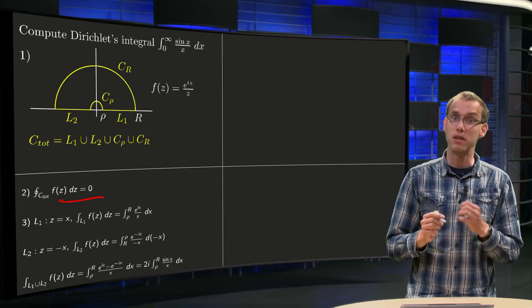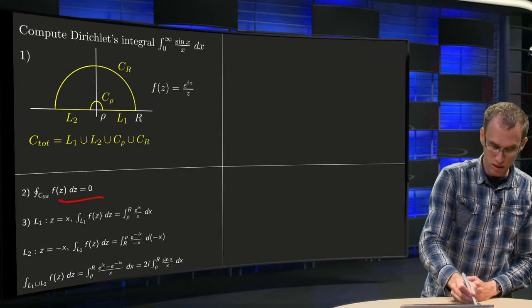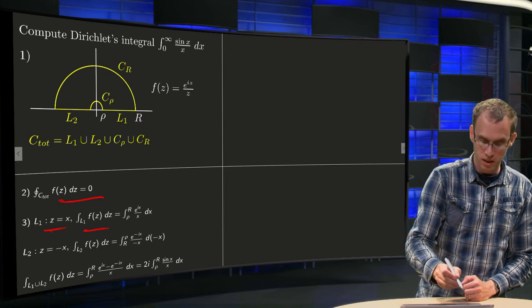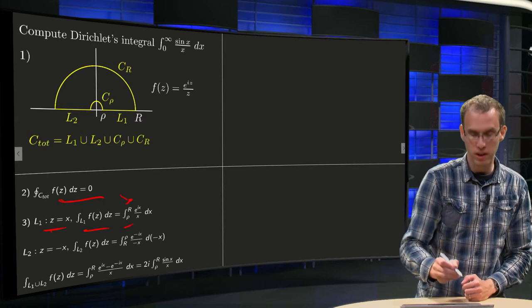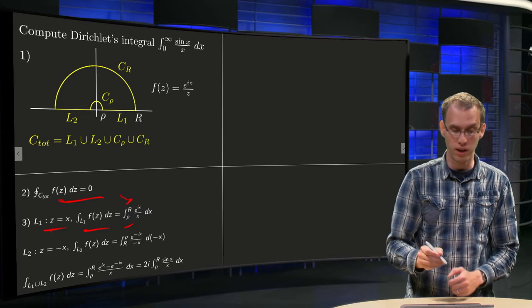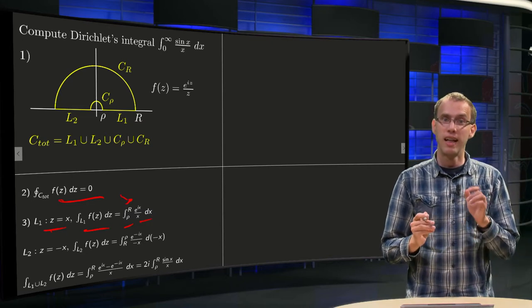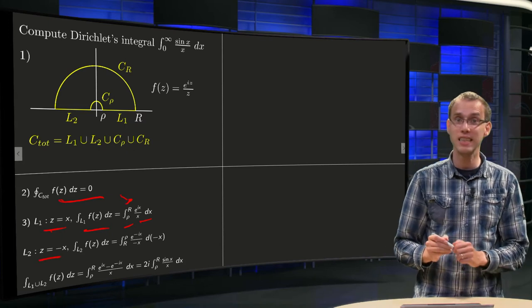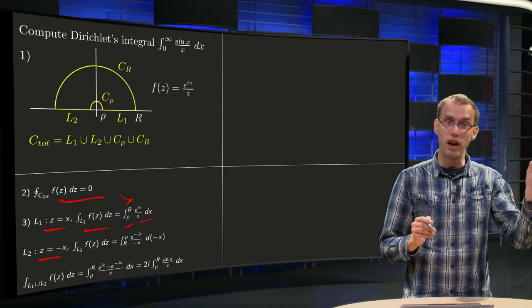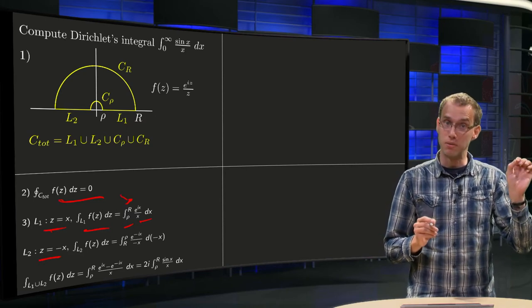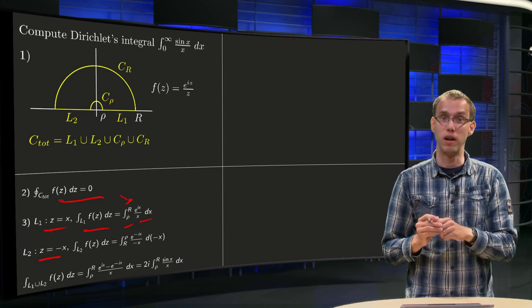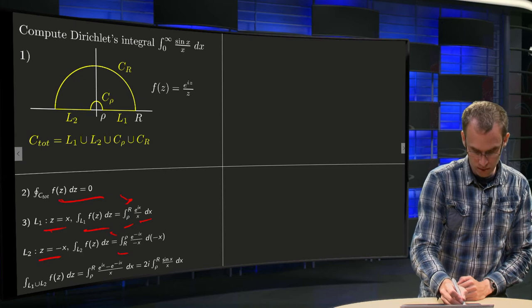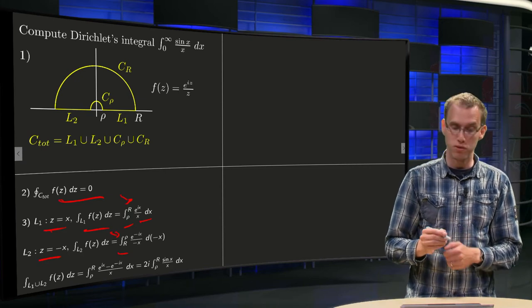Then step 3 will be a bit longer. In most cases, L1 is easy. You can just take z equals x, the integral along L1 f(z) dz. x will run from rho to R. Plug in z equals x everywhere, you get e to the power ix over x dx. L2 will be slightly more difficult. You take z equals minus x, and if you take z equals minus x, you start with your z at minus R and you go with your z to minus rho, so that means that x runs from R to rho.